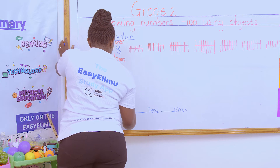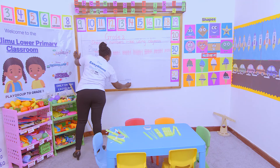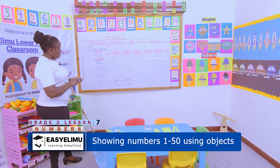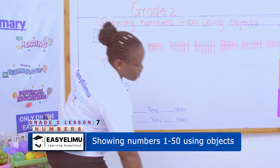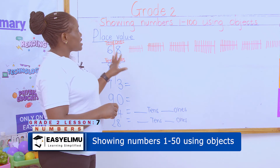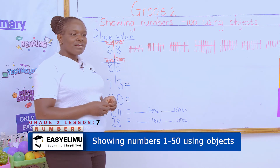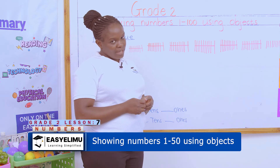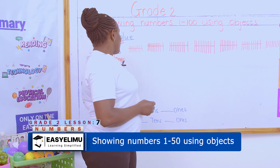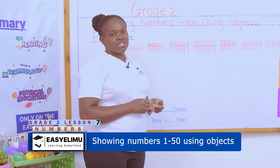Up to there, who still has a problem in representing numbers using bundles of sticks? Any questions? Now that is exactly what you're supposed to do. Even if you're given 100 and 200 and using bundles of sticks, it becomes very very easy, provided you know the place value. All this will be very easy. Thank you very much and I wish you all the best.